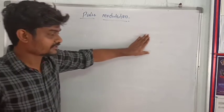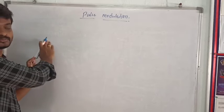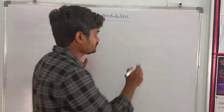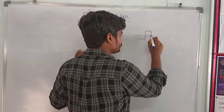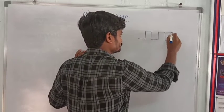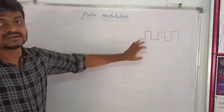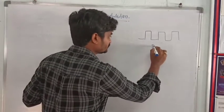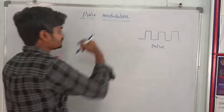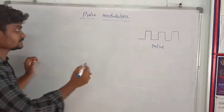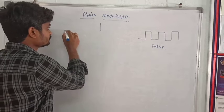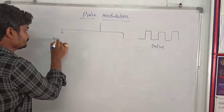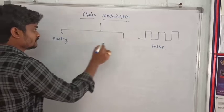Now in this class, depending upon the carrier — where the carrier is a pulse signal — we study Pulse Modulation. Pulse modulation is classified into two types: analog and digital.